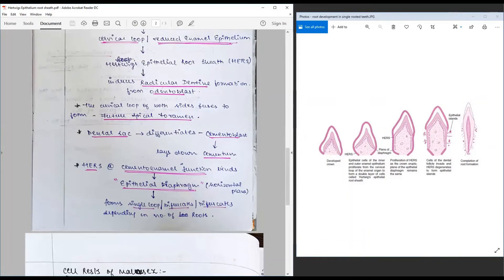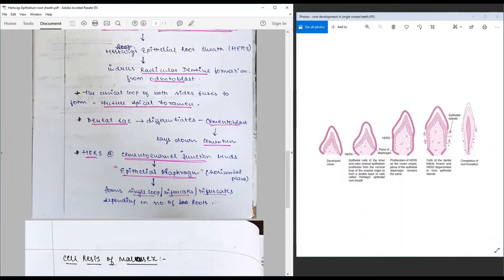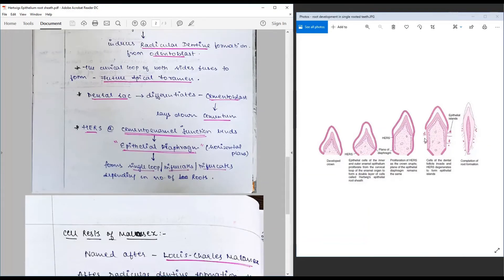So the cemento-enamel junction bend or the epithelial diaphragm or the horizontal plane forms a single loop for a single root or bifurcates or trifurcates depending upon the number of roots. The cells here...